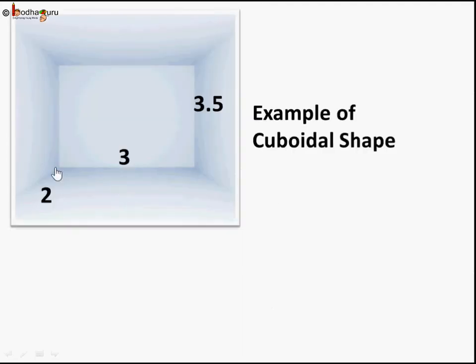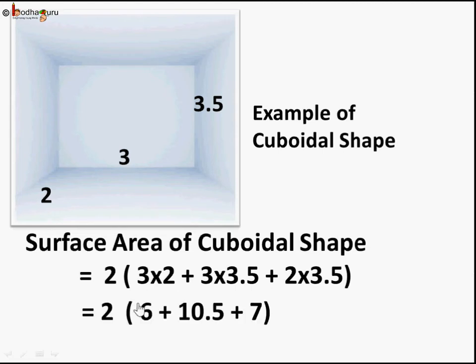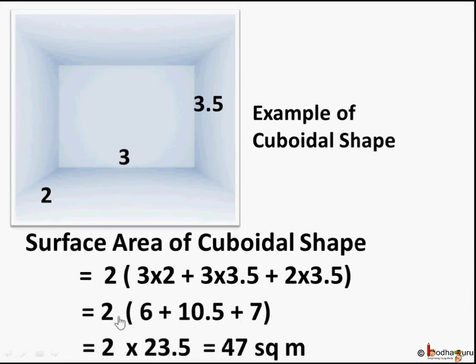Let's take an example. Let's say there is a cuboid shape with length of three meters, breadth of two meters and height of 3.5 meters. What will be its surface area? We put in the formula 2 times 3 into 2 plus 3 into 3.5 plus 2 into 3.5. LB, BH, LH. And this is nothing but 2 into 6, 3 into 3.5 is 10.5, 2 into 3.5 is 7. When we sum these things we get 23.5 and 2 into 23.5 is 47, 47 square meters.